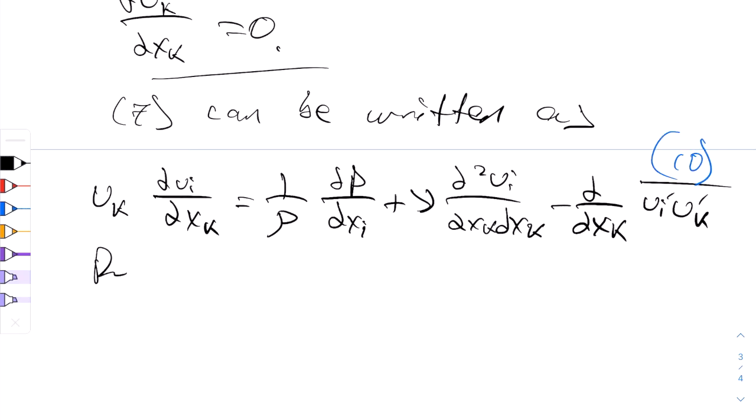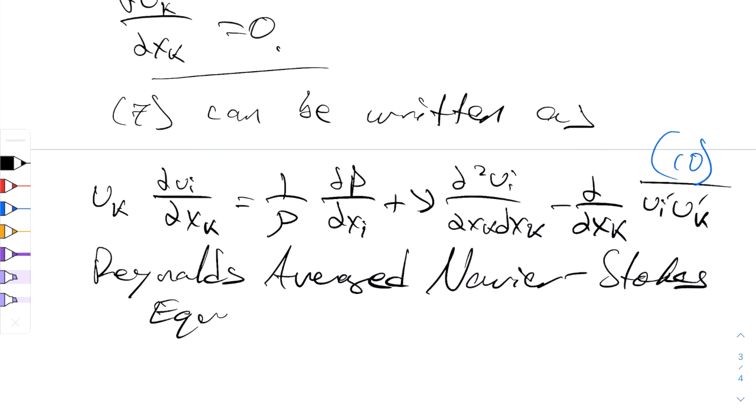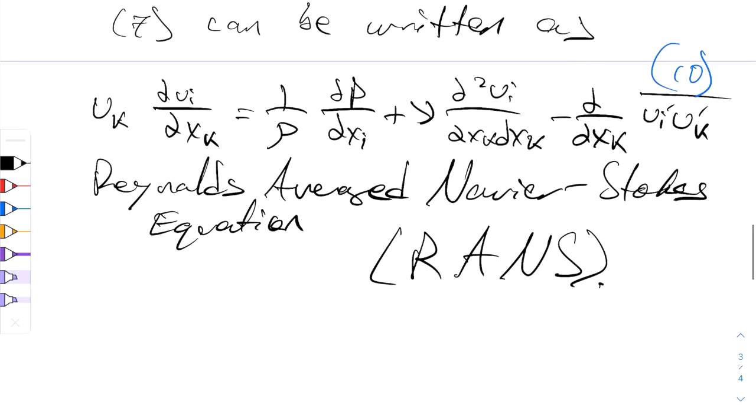This is the Reynolds averaged Navier-Stokes equation, otherwise known as RANS, R-A-N-S. And you notice we've made a steady assumption. Technically, the RANS equations are unsteady, but we'll just look at steady flows.